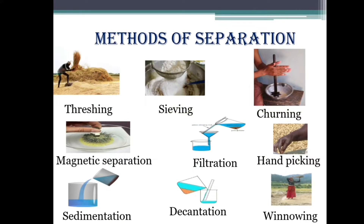In the last class, we learnt what is separation. We know that the method of separation depends upon the properties of the components of the mixture. Now let us learn about the different methods of separation with examples. There are several types of separation techniques used in separating mixtures or substances. Usually, separation is done to remove all unwanted materials and to obtain useful components.